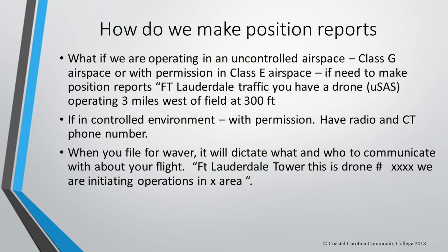How do we make position reports? If we're operating in uncontrolled airspace — Class G airspace — or with permission in Class E, and you need to make a position report, you would say something like: 'Fort Lauderdale traffic, you have a drone operating three miles west of the field at 300 feet.' I would also announce when the mission was terminated. Don't expect a reply — it just gives the pilots a heads up.